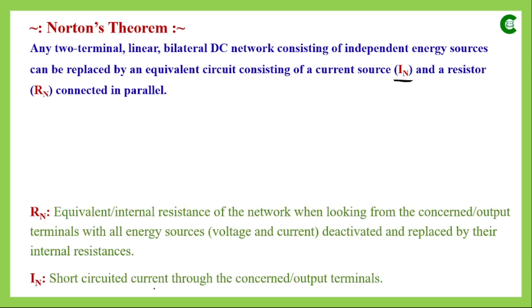IN is the short circuit current through the concerned or output terminals. Unlike Thevenin's theorem where we found open circuit voltage, here after removing the concerned resistor or variable component we short that path and find how much current flows through it. RN has the same meaning as RTH — it is the equivalent or internal resistance of the network when looking from the concerned terminals with all energy sources deactivated and replaced by their internal resistances. The rule of deactivation is the same as before.